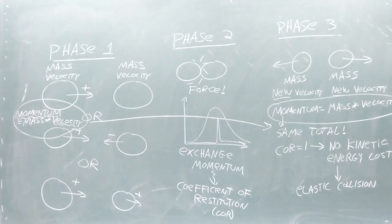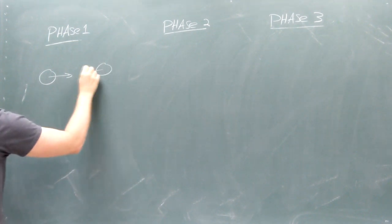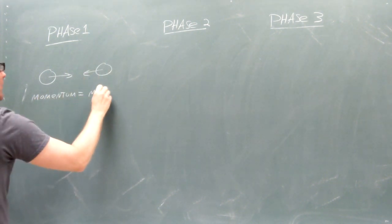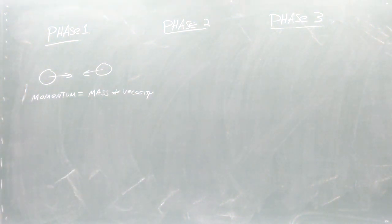Let's review what we know about the three phases of collisions. In Phase 1, the colliders approach each other with their initial velocities. Each collider's mass and velocity is used in calculating its momentum, which is mass multiplied with velocity.